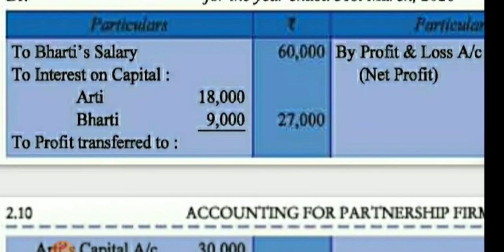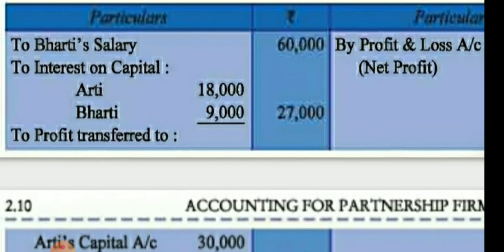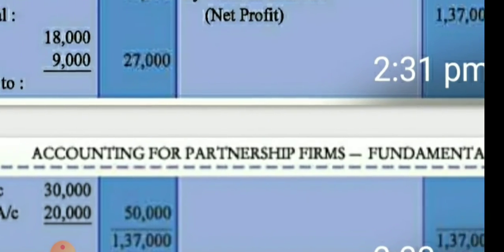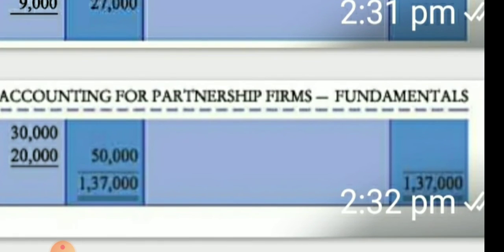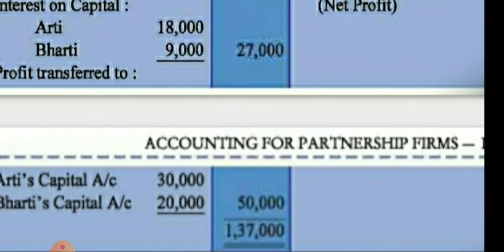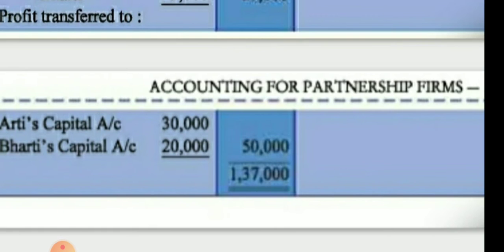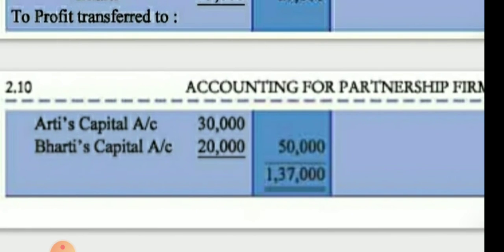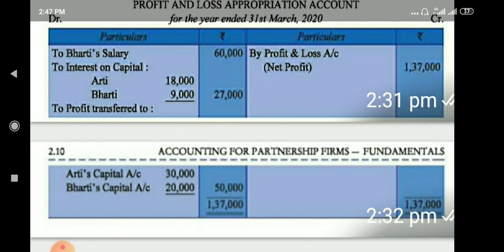Bharti's salary: ₹5,000 per month × 12 = ₹60,000. Interest on capital: Aarti's capital — 6% = ₹18,000; Bharti's capital — 6% = ₹9,000. There is no interest on drawings. Total debit side: ₹1,37,000. Debit expenses: ₹87,000 and ₹60,000. Difference is ₹50,000, which is distributed in profit sharing ratio 3:2 — Aarti gets ₹30,000 and Bharti gets ₹20,000.